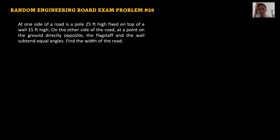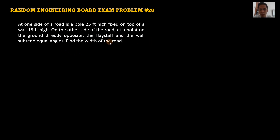This problem is a past mechanical engineering board exam problem. It is under trigonometry. At one side of a road is a pole 20 feet high, fixed on top of a wall 15 feet high. On the other side of the road, at a point on the ground directly opposite, the flagpole and the wall subtend equal angles. Find the width of the road.